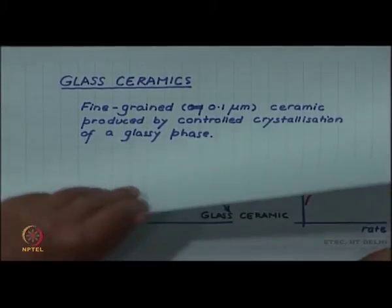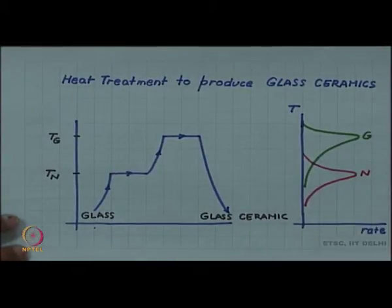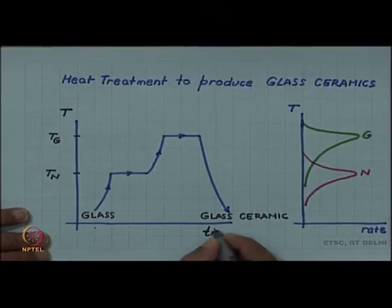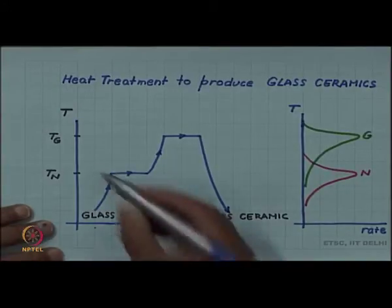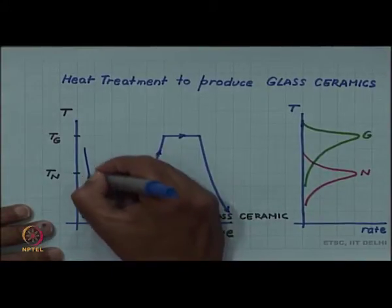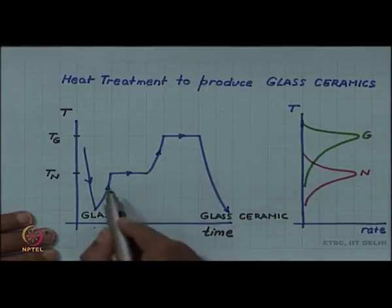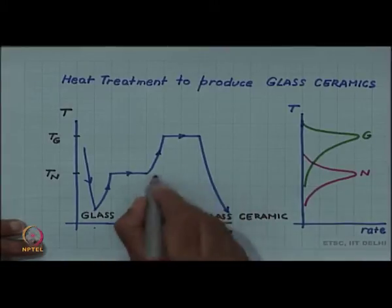Let us look at the heat treatment process for glass ceramic. The first figure shows the temperature-time heat treatment cycle. Initially the liquid is quenched to produce glass, then this glass is held at a temperature at which the nucleation rate is maximum.